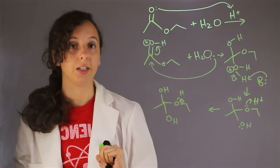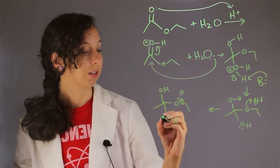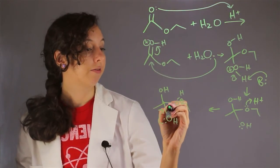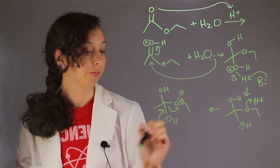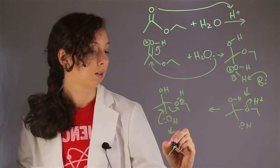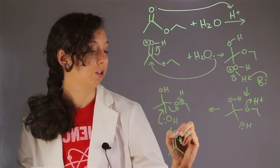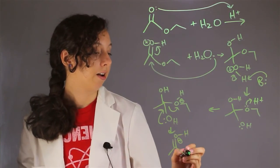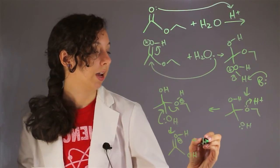Now we're ready to have it collapse back in reforming our carbonyl. So let's just take this guy, this lone pair, we're going to have him come down and kick off this now ethanol. So now we have our carbonyl, which is still positively charged, because we still have our hydrogen here. And we have an OH here, because this is this guy. And we've also now formed ethanol.